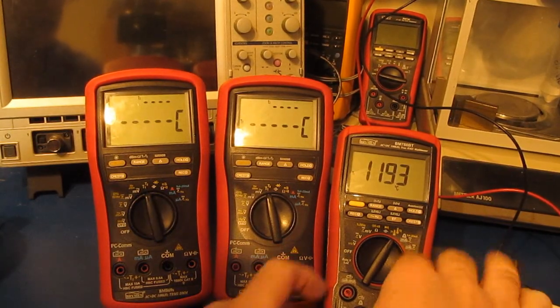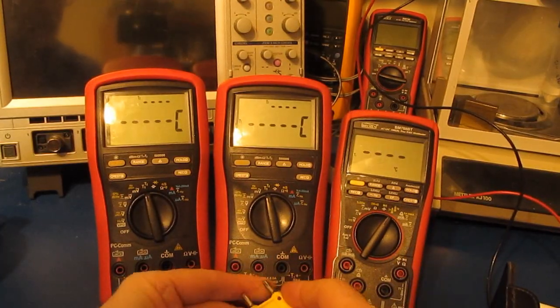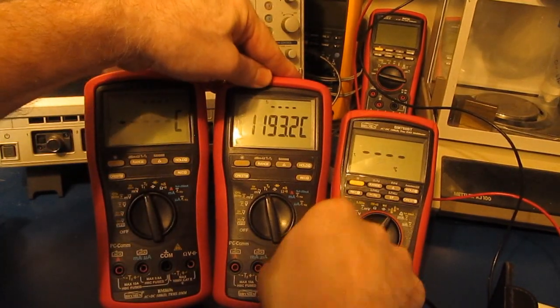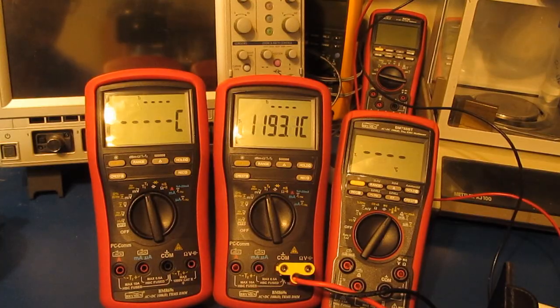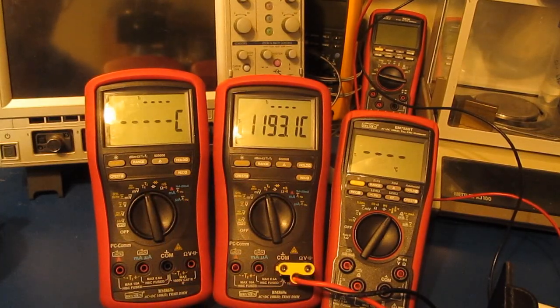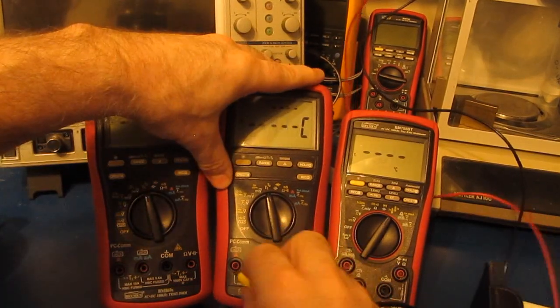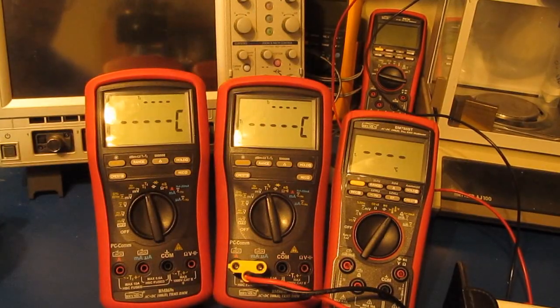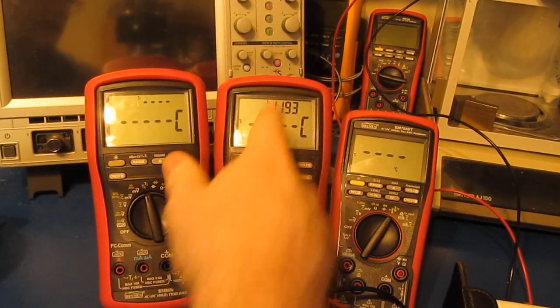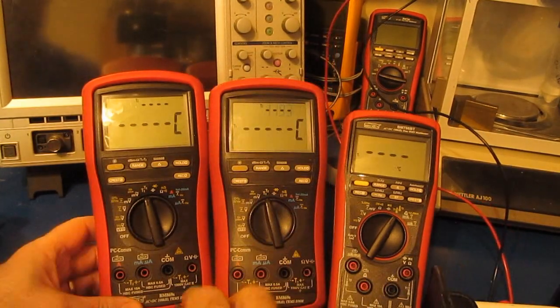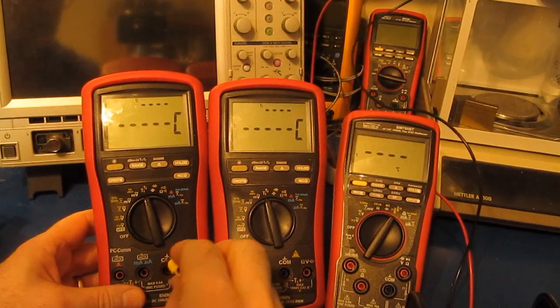1193. And let's try it with the original BM869S: 1193.1. Let's try it on T2: 1193. Let's try it on the one that's been through the lifecycle test: